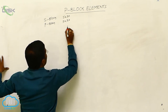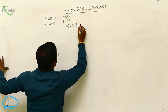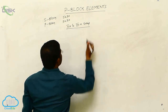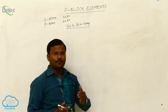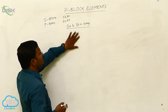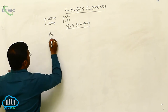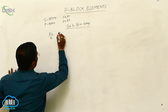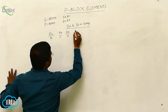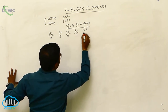From 3rd A to 8th A Group Elements belong to P-Block, because in all these elements the last electron is present in a P-orbital, hence they are called P-Block Elements. The 3rd A-Group is called the Boron Family, 4th A-Group is called the Carbon Family, 5th A-Group is called the Nitrogen Family, 6th A-Group is called the Oxygen Family, and 7th A-Group Elements are called the Fluorine Family.